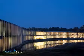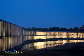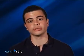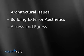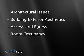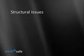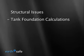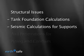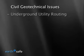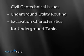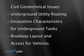Facilities with emergency power systems are critical and complex. A high level of coordination is required amongst the design team. The architectural issues to address are building exterior aesthetics, access and egress, and room occupancy and fire rating. Structural issues include tank foundation calculations, seismic calculations for equipment supports, and wall penetration for piping and conduits. Civil geotechnical issues are underground utility routing and tank area, excavation characteristics for underground tanks, and roadway layout and access for fuel delivery and emergency vehicles.